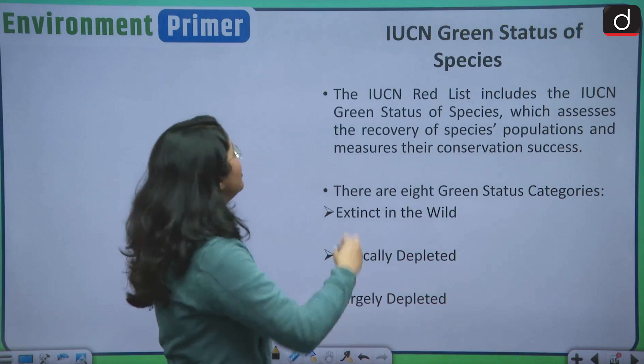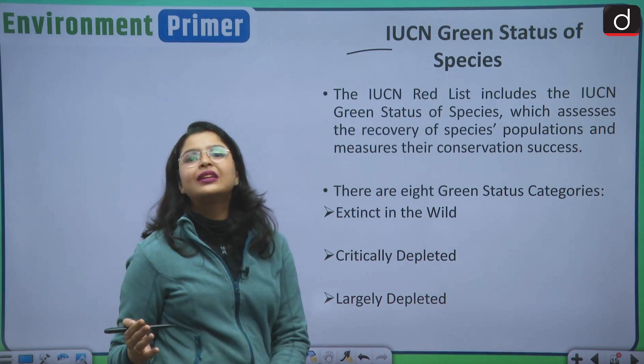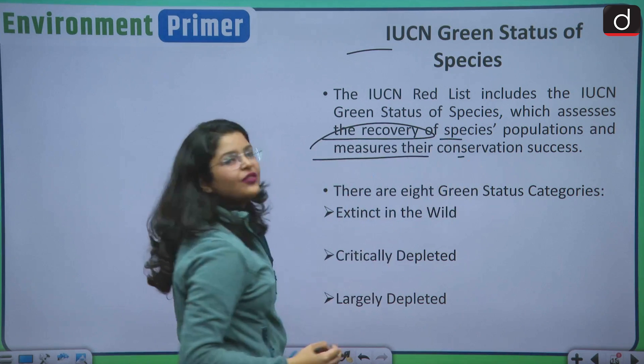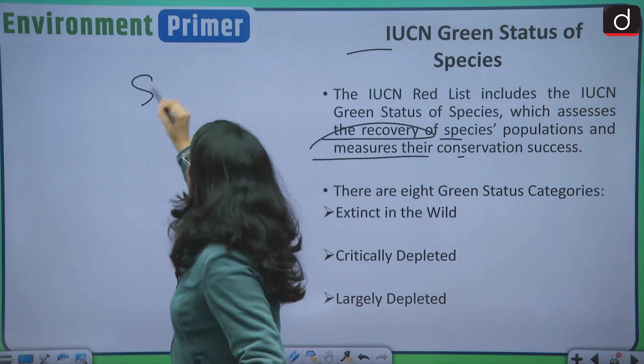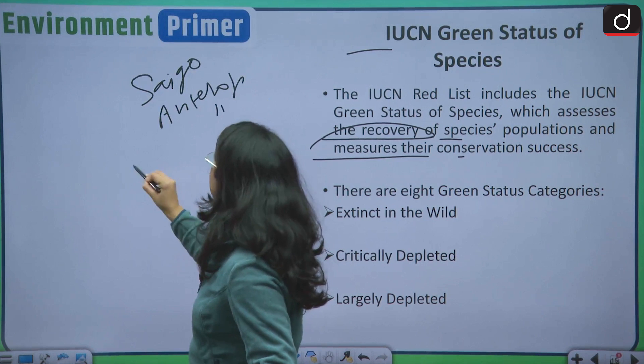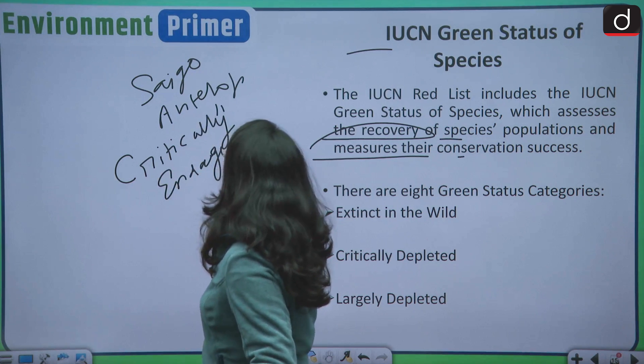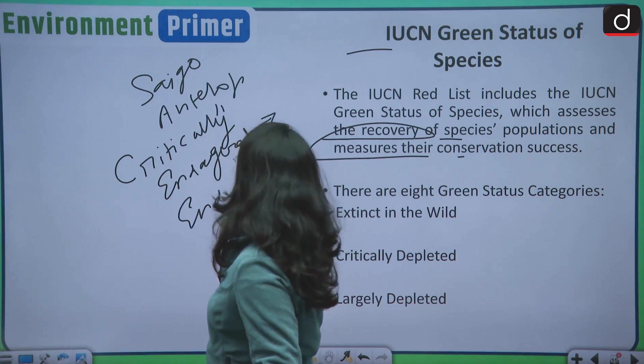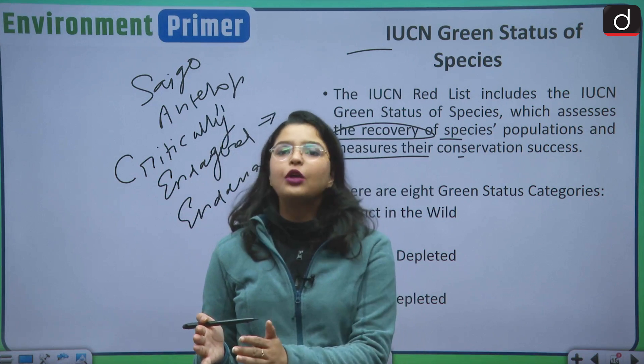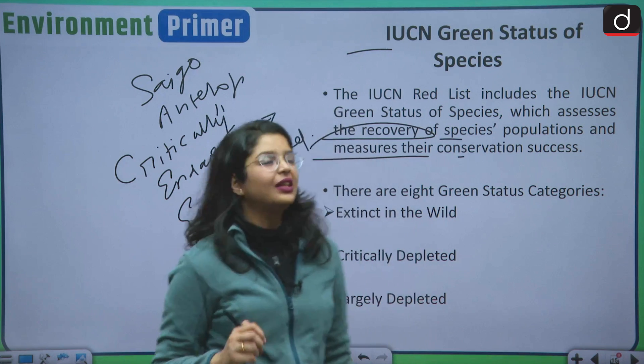Let us analyze the IUCN green status of species. This IUCN red list also includes this IUCN green status of species which assesses the recovery of species populations and measures their conservation success. Recently, saiga antelope is a success story because it has moved from the category of critically endangered to endangered. Preservation efforts have been paid off. We have moved this saiga antelope from critically endangered to endangered category but the sad part is that it is still in the endangered category.